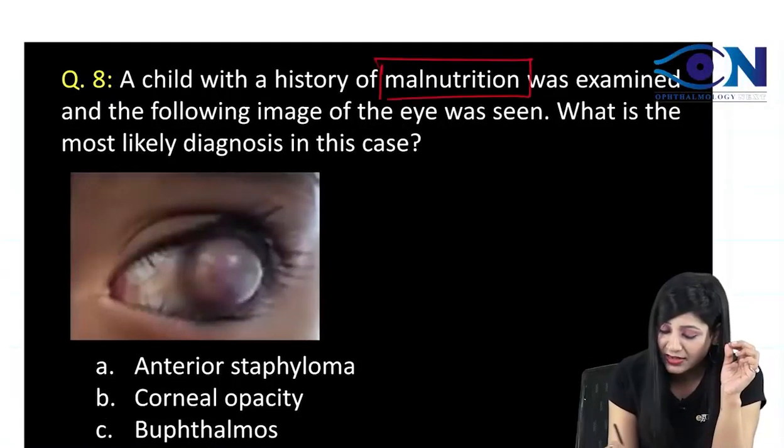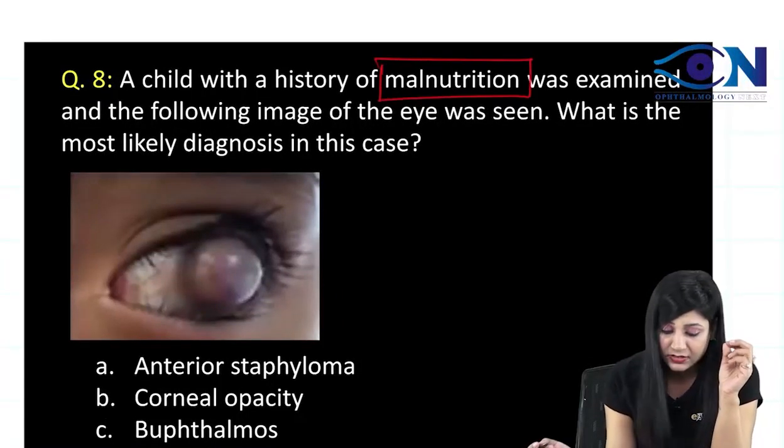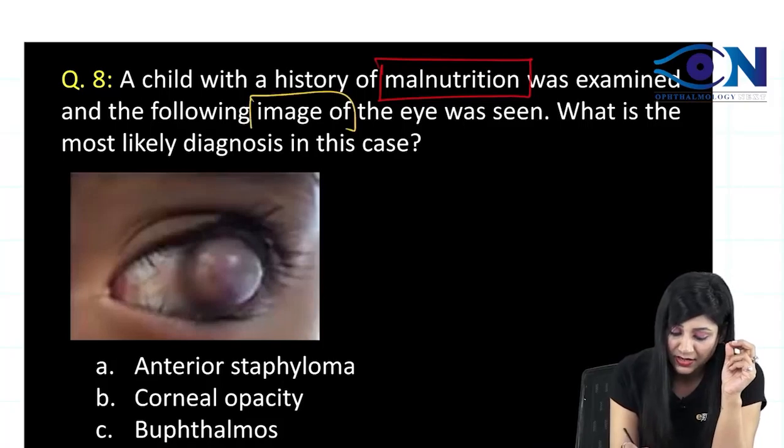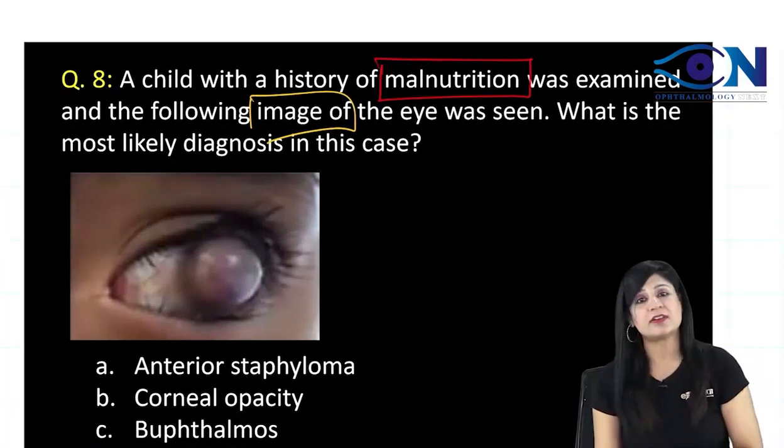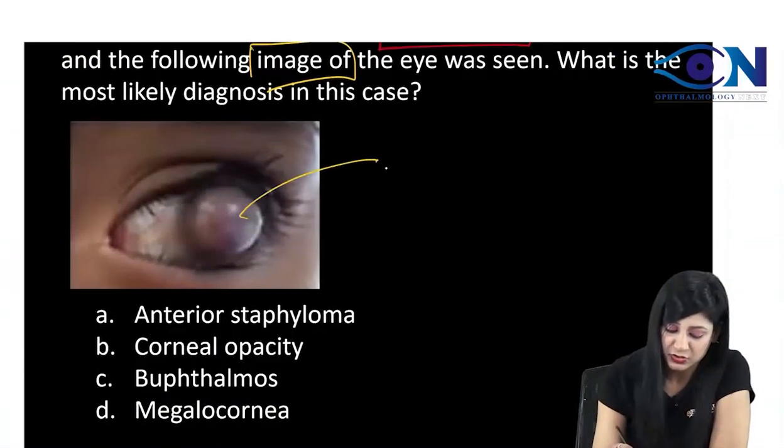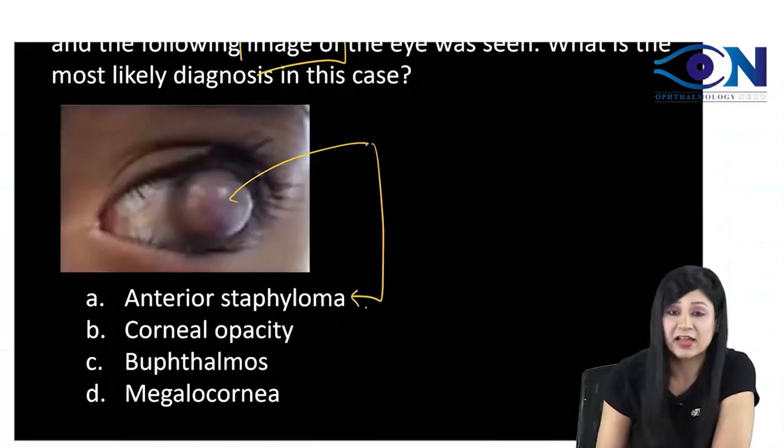A child coming with a history of malnutrition and you can see this image. So, even if you do not read the question, you see this image, you can see this is anterior staphyloma.